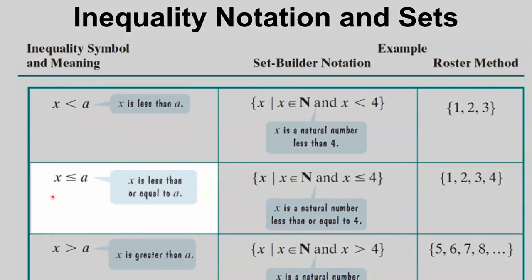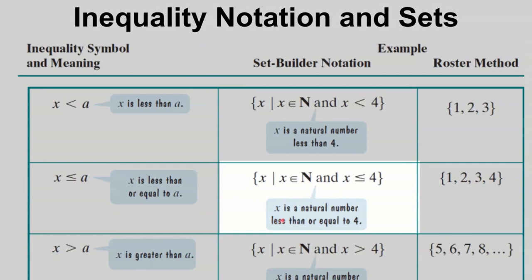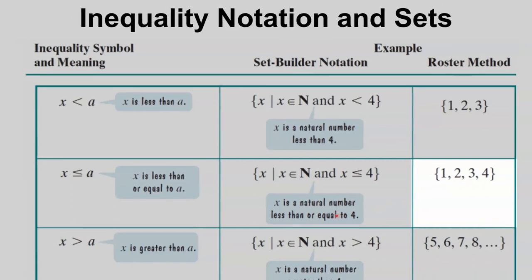This inequality symbol means x is less than or equal to a. This set is read as x is a natural number less than or equal to 4, meaning x is an element of N and at the same time less than or equal to 4. Using the roster method, these are the elements of the set being described.